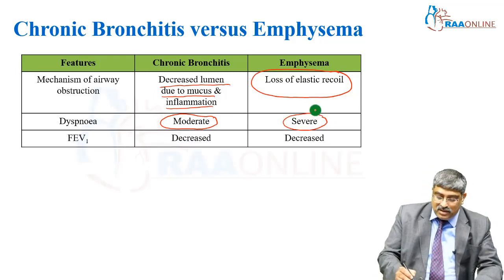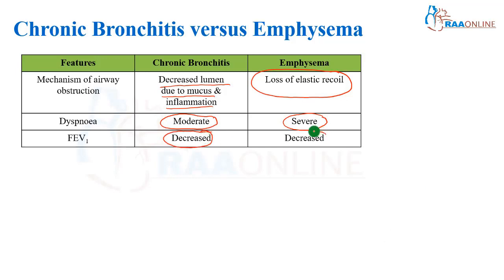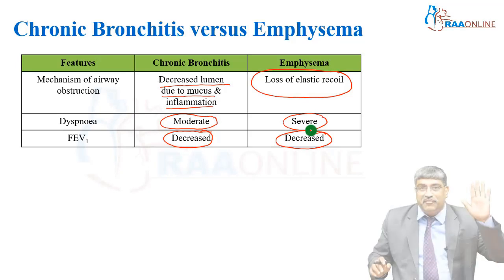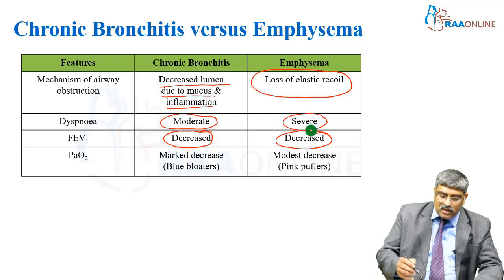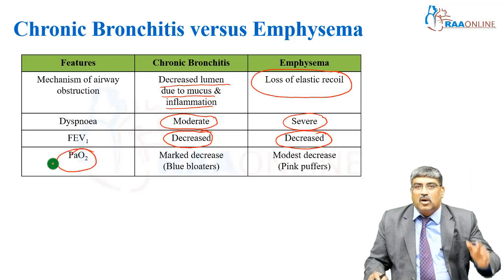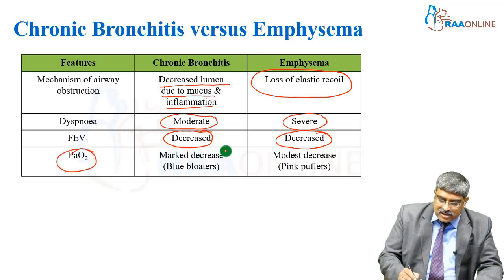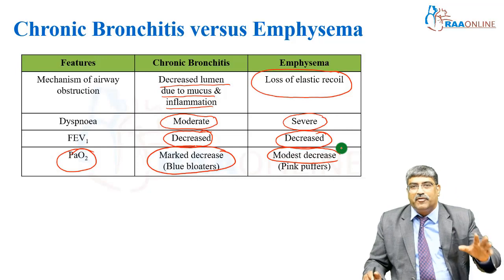FEV1 is decreased in chronic bronchitis and also decreased in emphysema — in both obstructive diseases the FEV1 will be decreased. Coming to PaO2, oxygenation is markedly decreased in chronic bronchitis and only modestly decreased in emphysema.